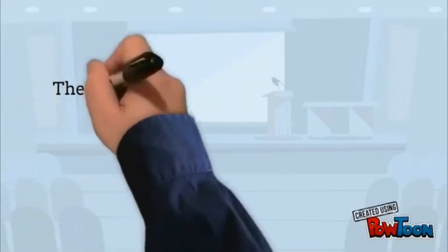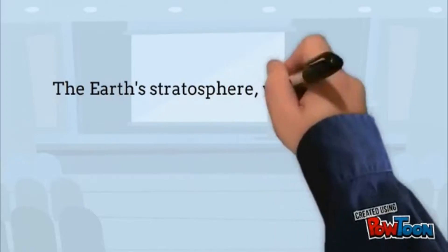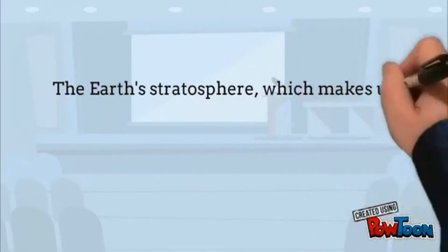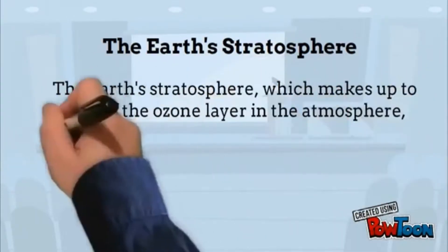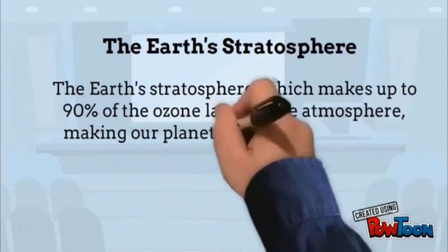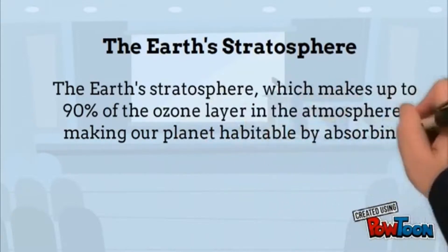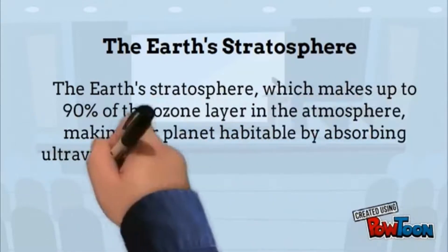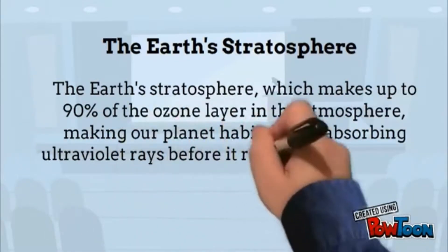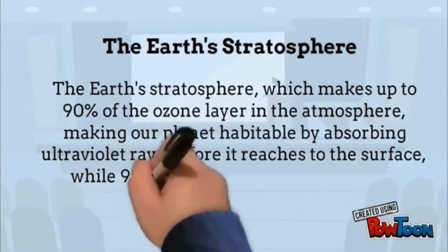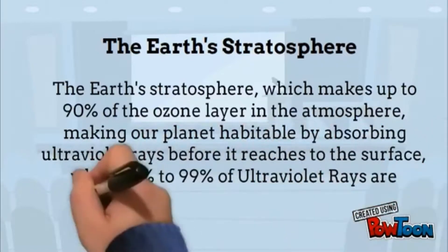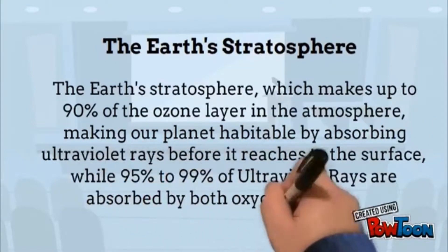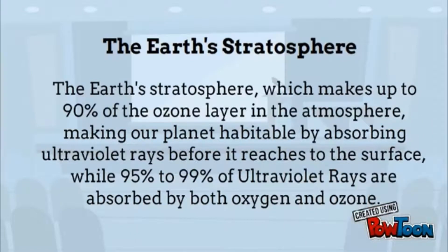The Earth's stratosphere, which makes up 90% of the ozone layer in the atmosphere, makes our planet habitable by absorbing ultraviolet rays before they reach the surface, while 95 to 99% of ultraviolet rays are absorbed by both oxygen and ozone.